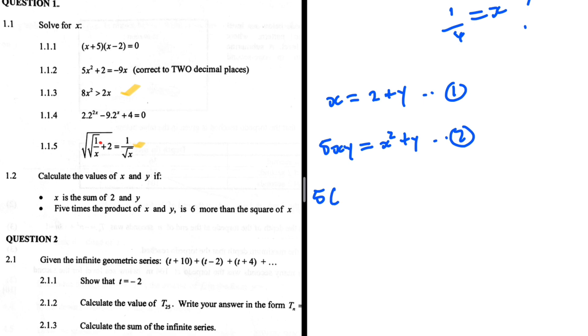So when I have 5 multiplied by (2 plus y) multiplied by y, in place of x we are substituting 2 plus y. This equals (2 plus y) squared plus 6.